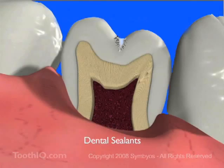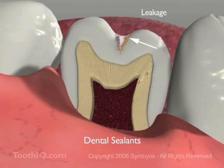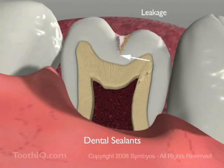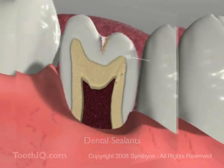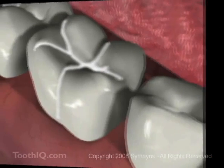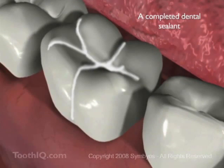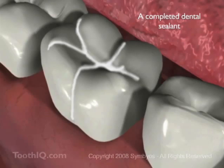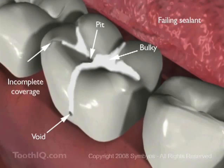But sealants do have some potential downsides. It is possible for microleakage to occur along the sealant, especially if moisture is present when the sealant is placed. If leakage does occur, it may be difficult to detect until a large cavity develops beneath the sealant. It's important to remember that sealed teeth are not completely resistant to tooth decay. It's a big mistake to relax nutrition and oral hygiene standards on the belief that sealants alone will prevent cavities. Remember to see a dentist regularly to have the sealants evaluated for signs of failure, part of any thorough oral exam.